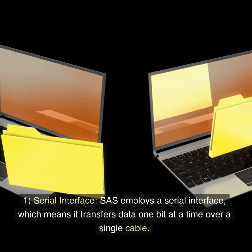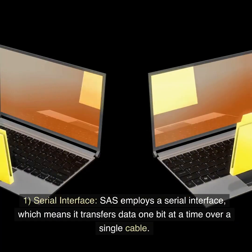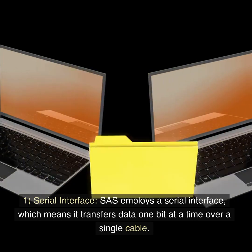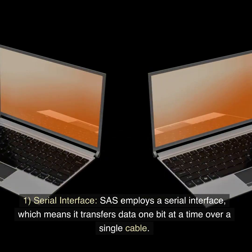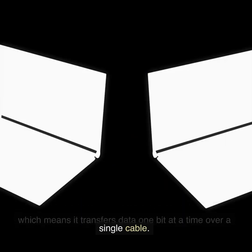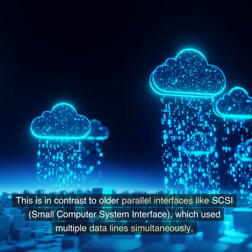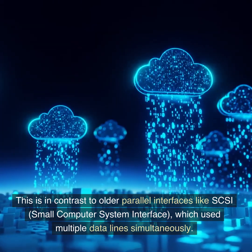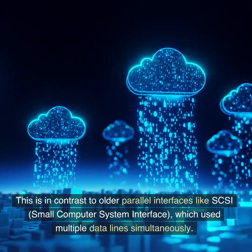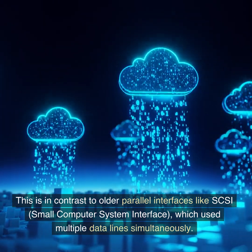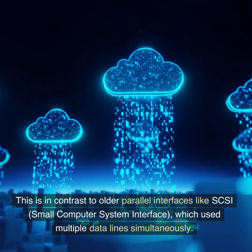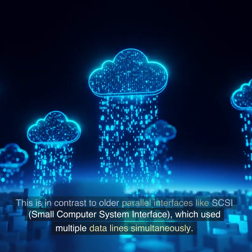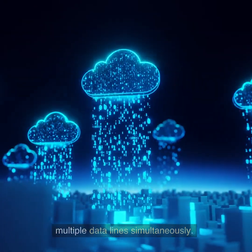Serial interface: SAS employs a serial interface, which means it transfers data one bit at a time over a single cable. This is in contrast to older parallel interfaces like SCSI (Small Computer System Interface), which used multiple data lines simultaneously.